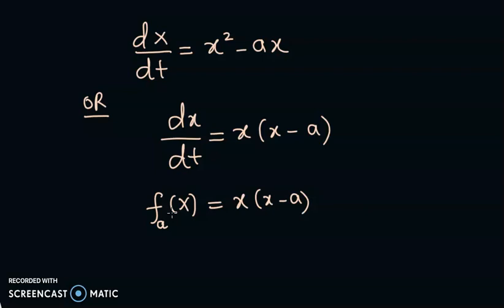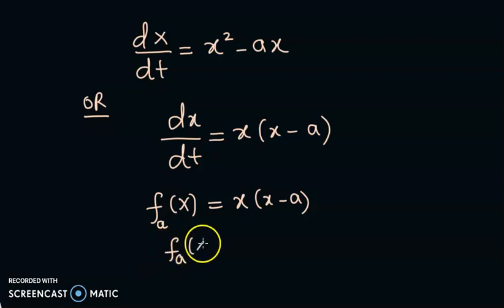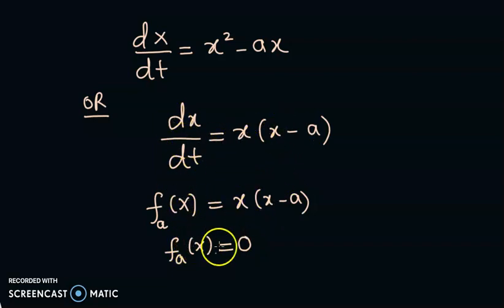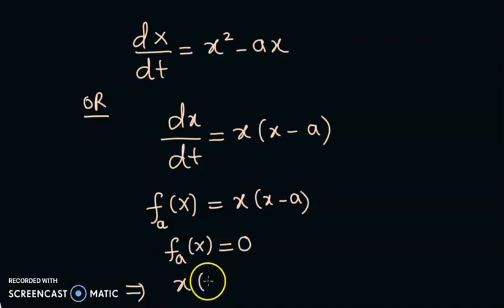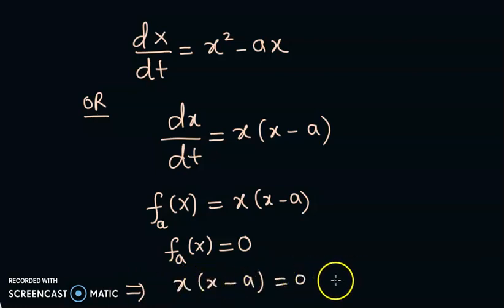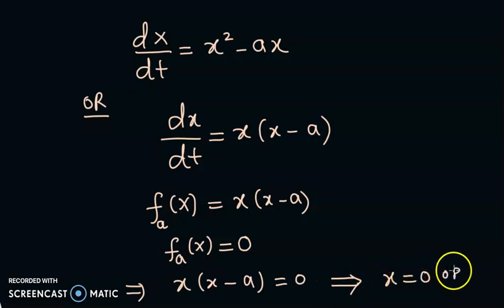First of all we want to see what are the equilibrium points. For equilibrium points, we always set dx/dt = f(x) = 0. From here we get x(x - a) = 0, which gives us x = 0 or x = a.